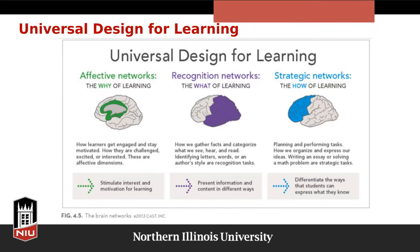Some ways to incorporate UDL principles to make learning more inclusive include creating a course alignment map to make sure you're aligning all of your course materials, instructional materials, and learning activities with your course learning outcomes. You can share that alignment document with your students so they understand why the course is designed the way it is. You can also figure out what your students already know and use that information to craft a learning experience that fits students. Use formative and summative assessments. Formative assessments will help you see what students are actually learning and help you monitor their progress toward learning outcomes.